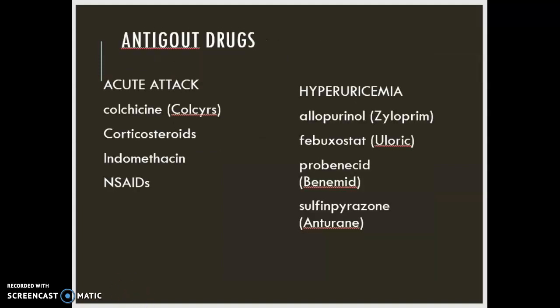The two aspects of gout treatment: for an acute attack, you'll see a medication called colchicine, but it's an older medicine. More frequently, you're going to see indomethacin ordered, NSAIDs, or a corticosteroid. For hyperuricemia without an acute attack — during those intervals in between — we'll see medications allopurinol, febuxostat, probenecid, and sulfinpyrazone.